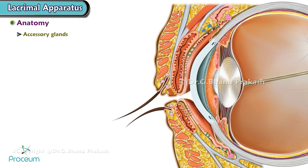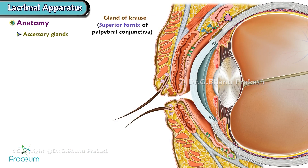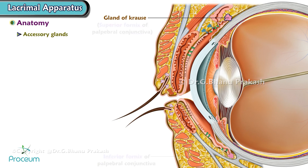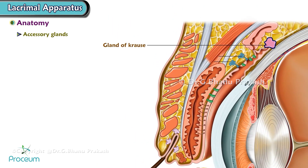Accessory glands: The gland of Krauss is present at the superior and inferior fornix of the palpebral conjunctiva. The gland of Wolfring is present at the free border of the tarsal plate.